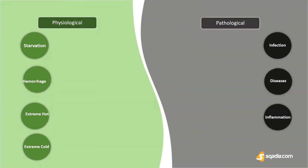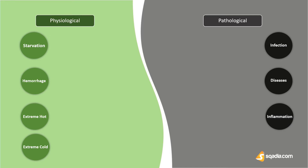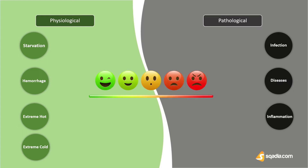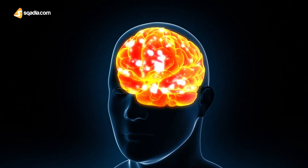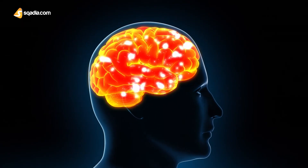Stress can be physiological or pathological. Physiological stress means disturbing the body's normal internal state — for example, starvation, hemorrhage, or extreme hot or cold. Pathological stress means some infection or inflammation caused by a pathogenic organism. You can take physiological stress as the good stress, as it is for the improvement of body functions, and pathological stress as the bad stress, as it may be prolonged and can lead to cellular injury. Whether physiological or pathological, the brain always takes it as a threat and sends quick signals to initiate the response.